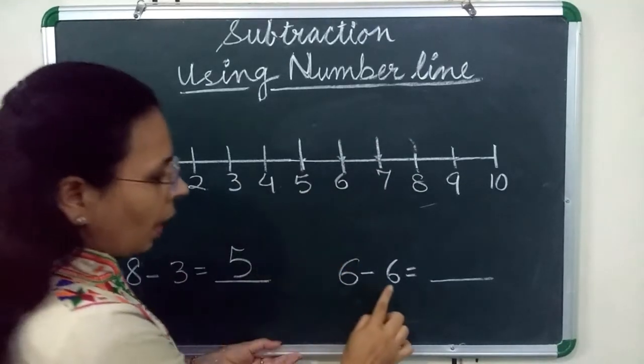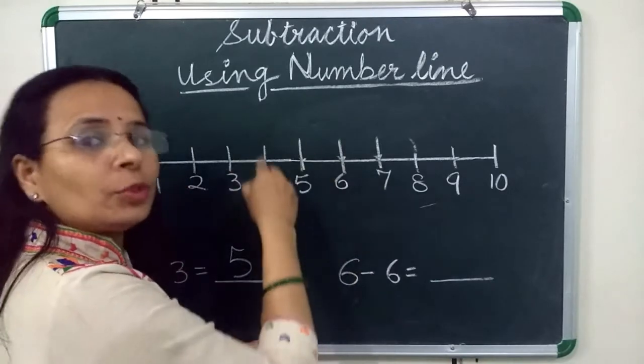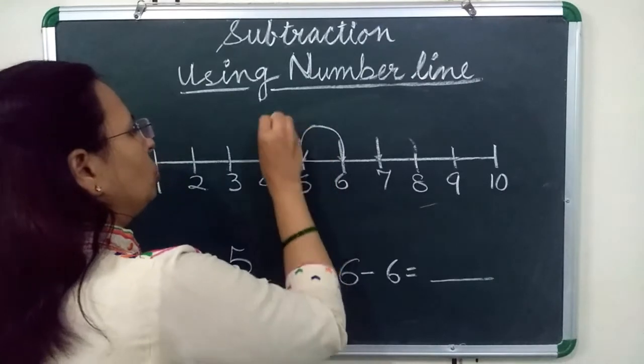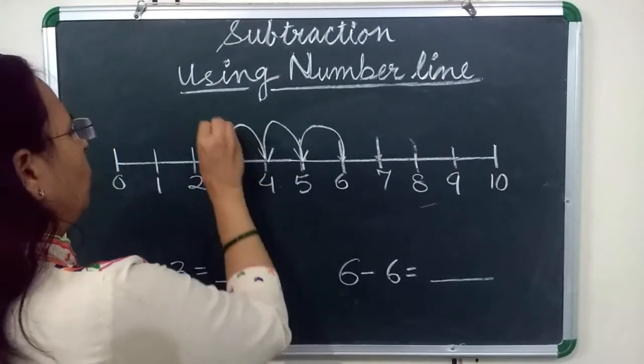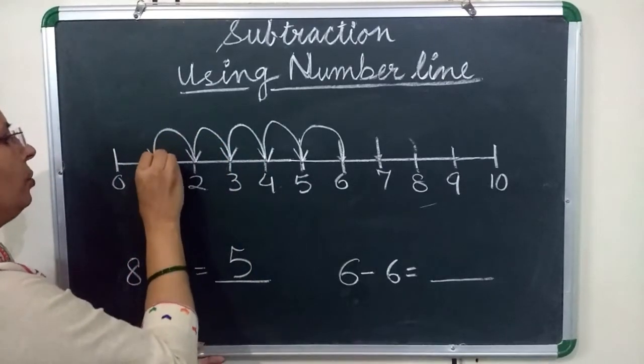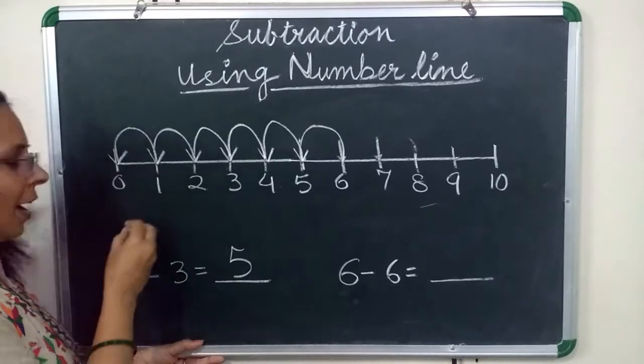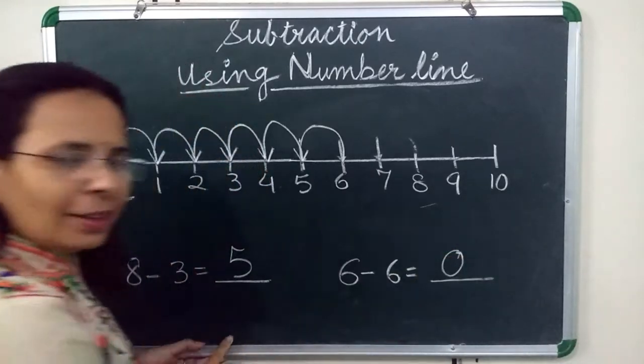So now we have to move 6 steps backward. So count with me. 1, 2, 3, 4, 5, 6. Now where we reach? At the place of 0. So 0 is our answer.